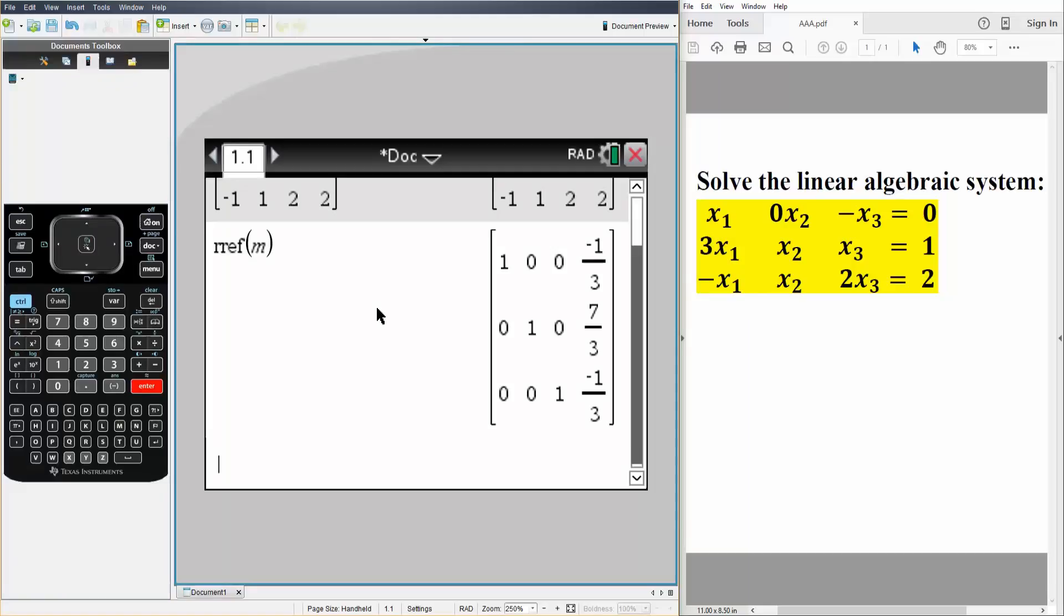So what this is actually saying when we have it in this nice form is that x1 is equal to negative one-third, x2 is equal to seven-thirds, and x3 is equal to negative one-third for this particular question.